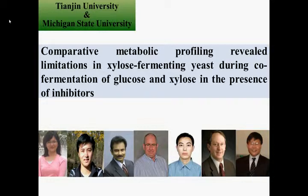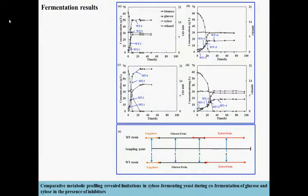Accordingly, a comparative metabolomics was performed on the xylose-fermenting yeast strains 2-4A and the parental strain 1-4, with or without three typical inhibitors: furfural, acetic acid, and phenol.